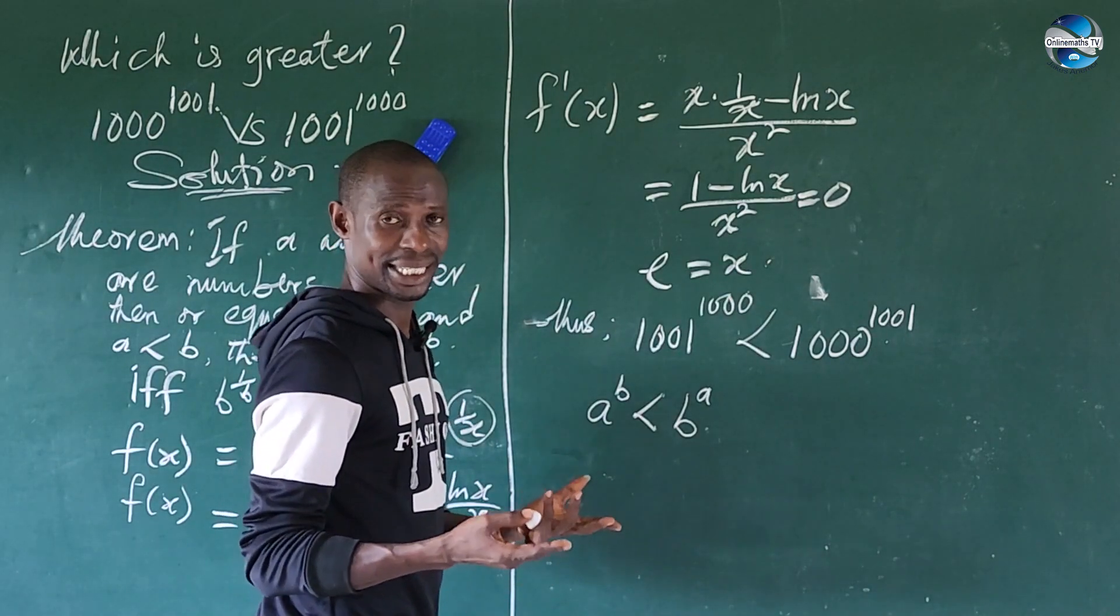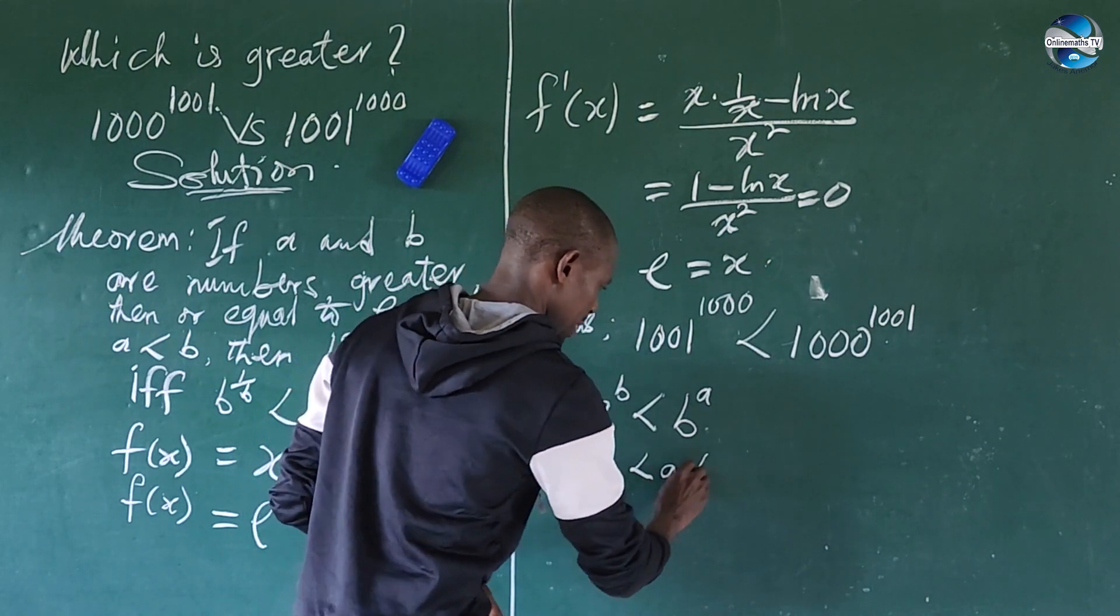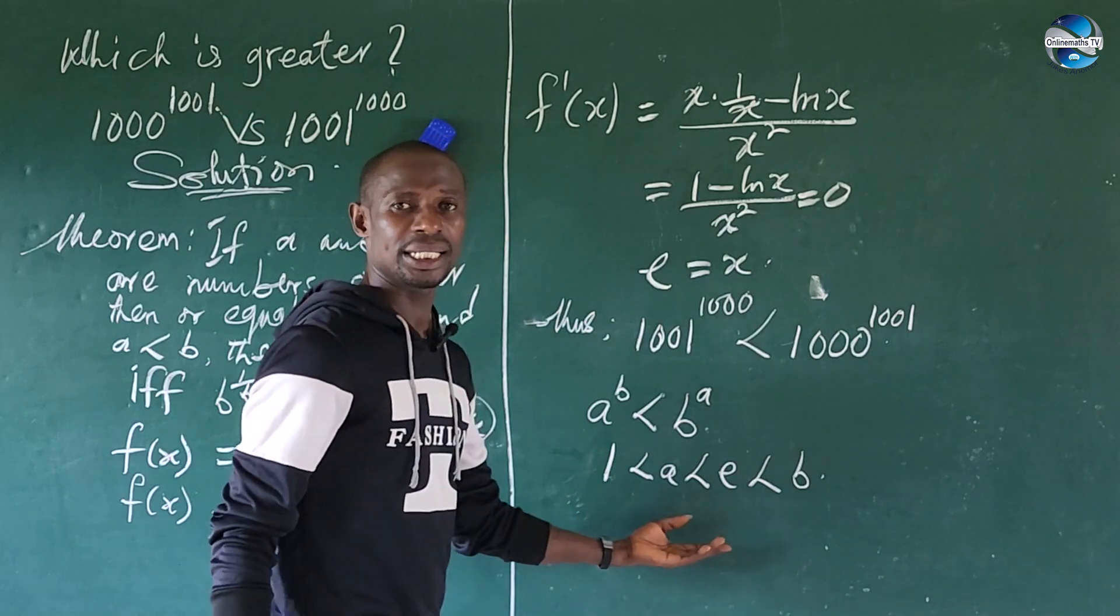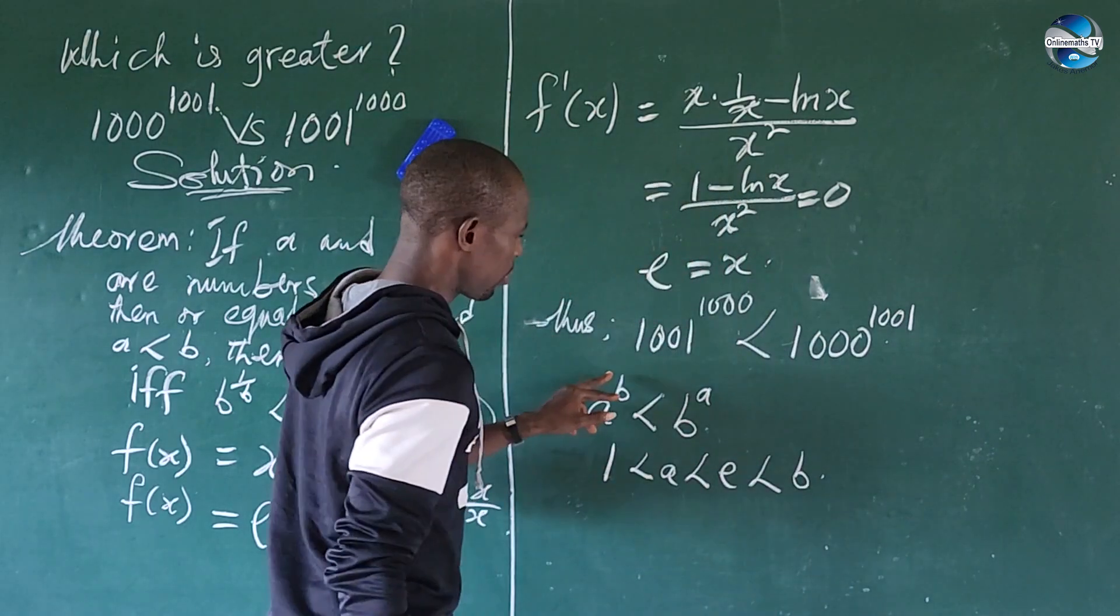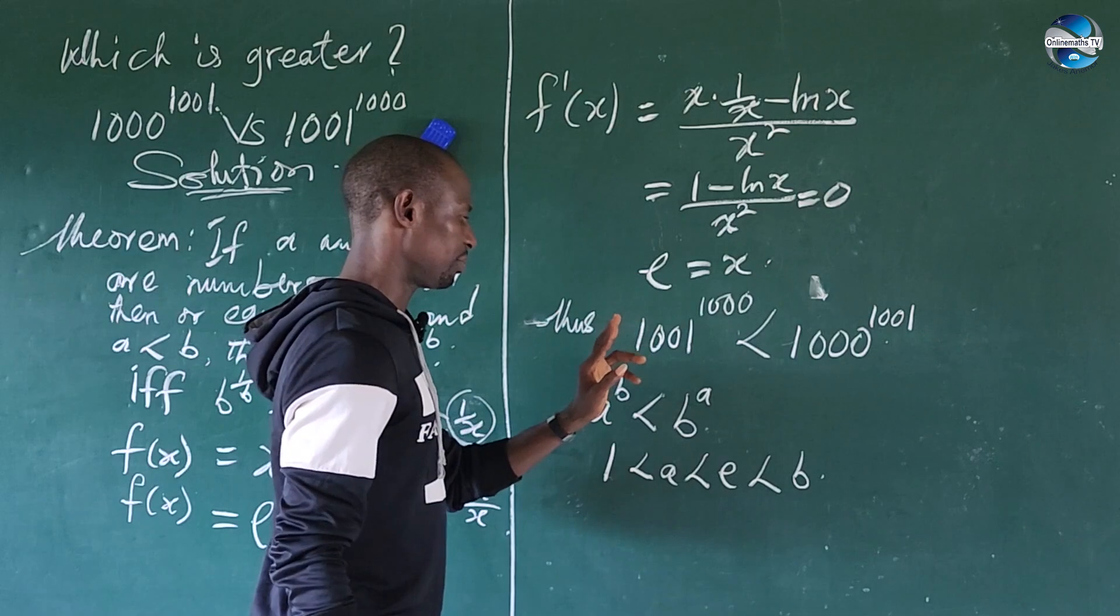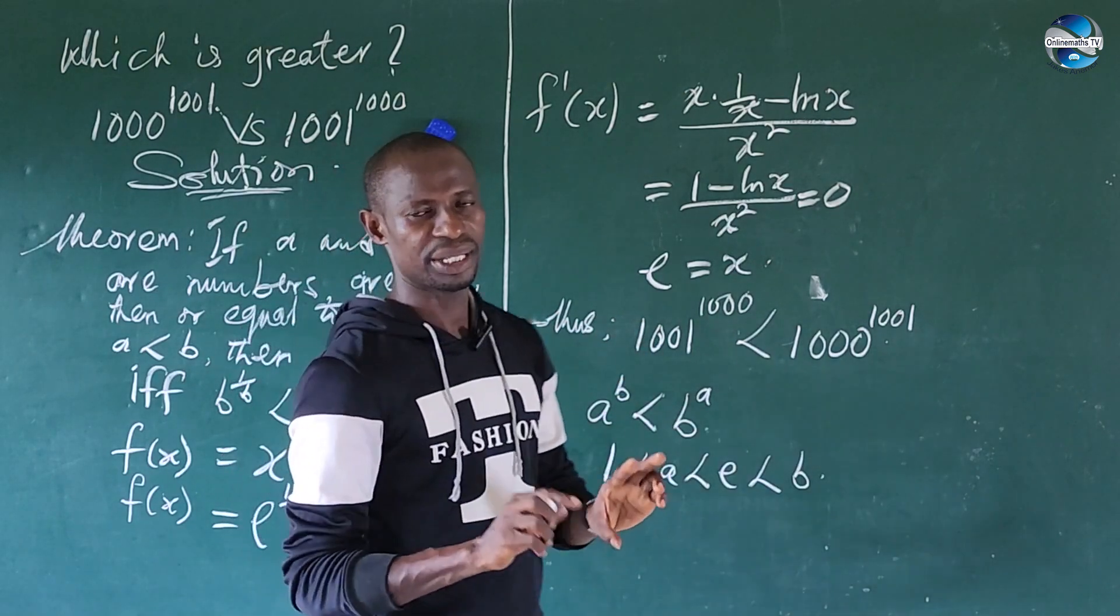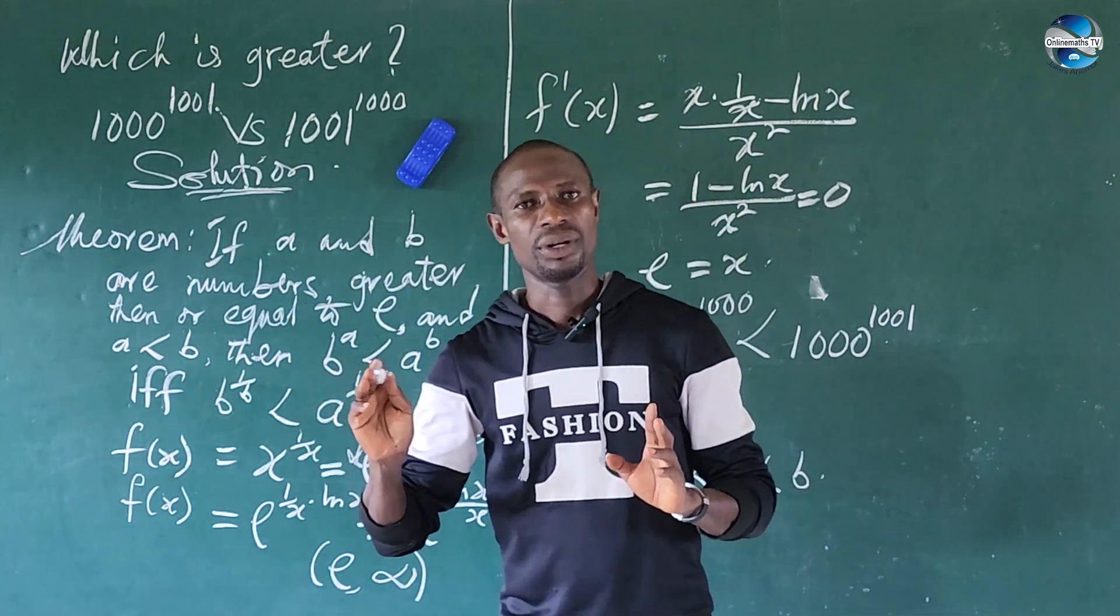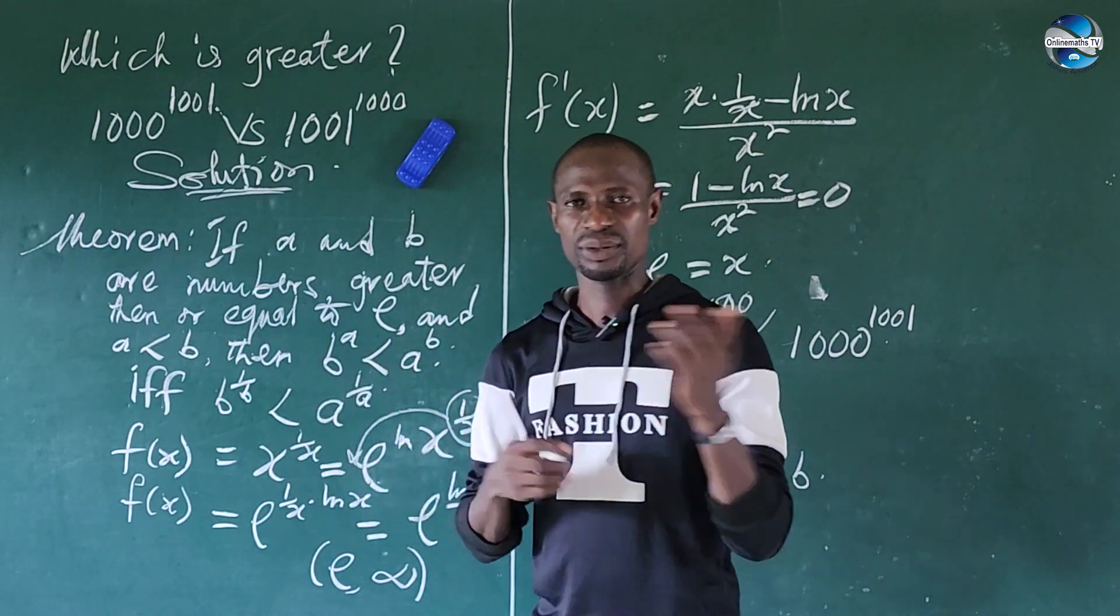For instance, if we have two numbers and they exist between this limit, that you have 1 less than your A, less than E, less than B, then in this regard, it is unfortunate or it is uncertain to tell whether your A to the power of B is less than B to the power of A, or B to the power of A is less than A to the power of B. So these are some of the critical situations we must consider and try to know which figure is higher when A is raised to B and B raised to A.